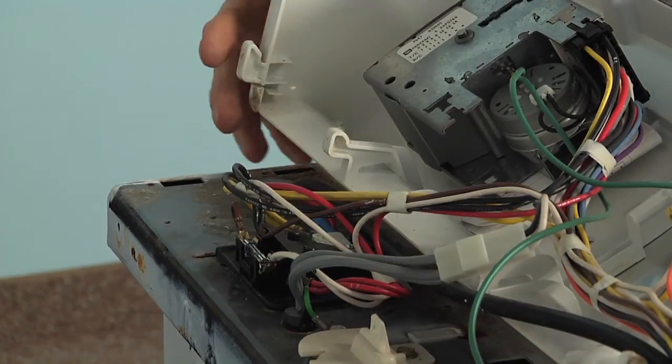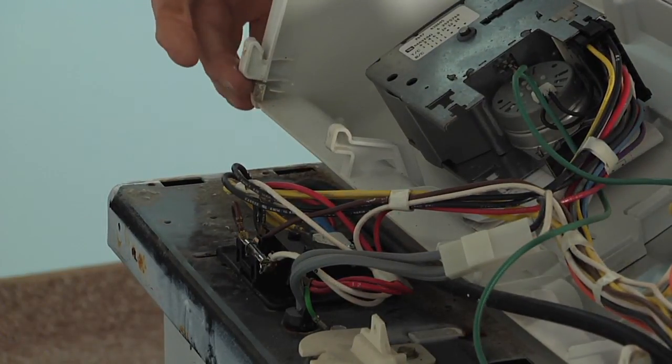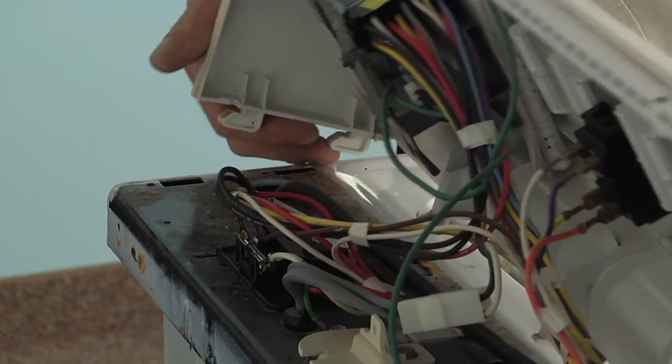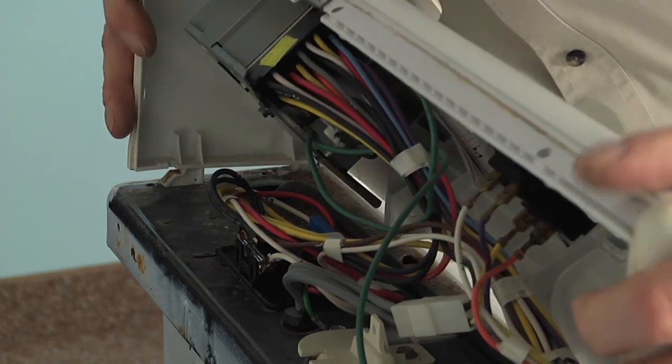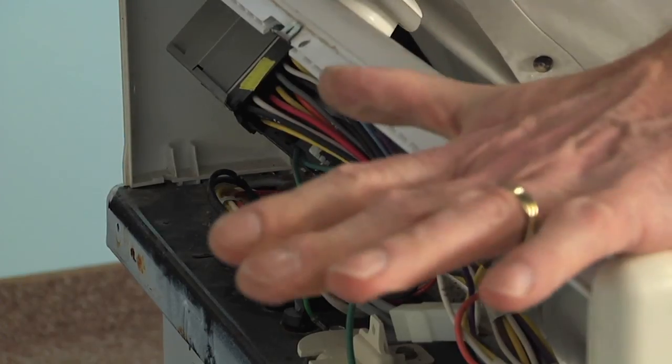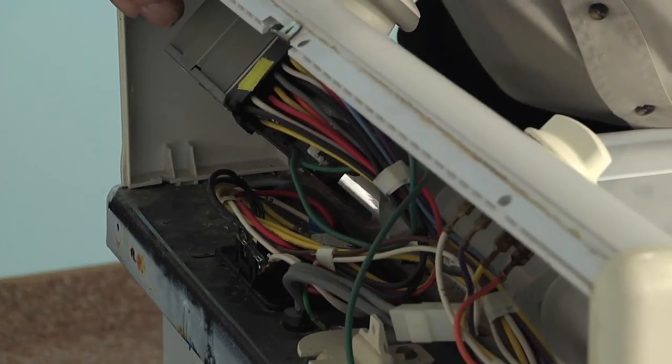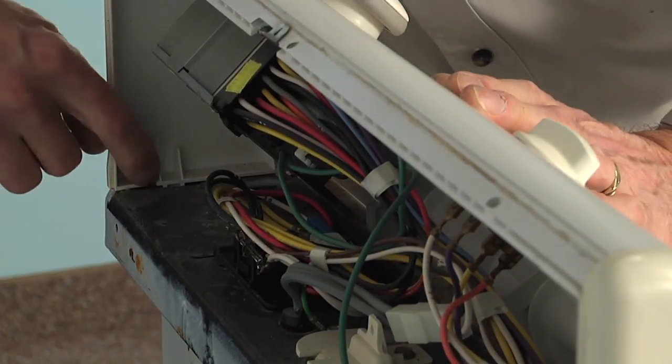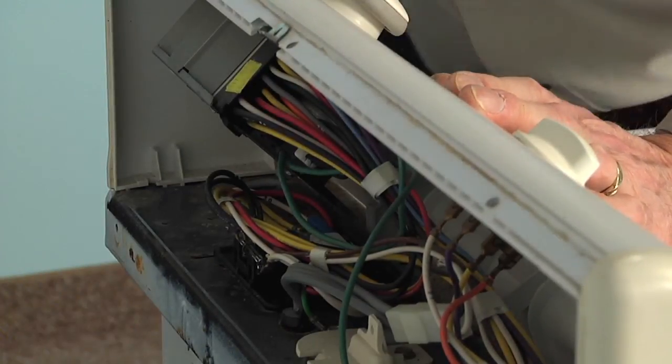Then we can put the console back into position. We'll line up the two tabs on either end of that console with the slotted openings in the top, sit it down into position, make sure it's sitting flush to the top, and then just give it a sharp tap on either end to push it backwards, and then we'll install those two-quarter inch screws in the corners.